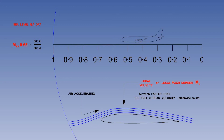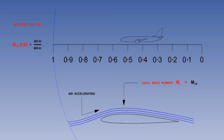The maximum velocity of air on the wing is called local velocity, because we are discussing air relative to the aeroplane surface. We can now introduce a Mach number called the local Mach number. The local Mach number is the ratio between the speed of the local velocity over the surface and the local speed of sound. The local Mach number will always be higher than the freestream Mach number. In this example, the freestream Mach number is Mach 0.55, and the local Mach number is higher at Mach 0.8.